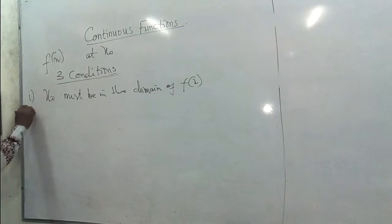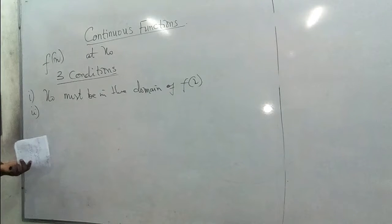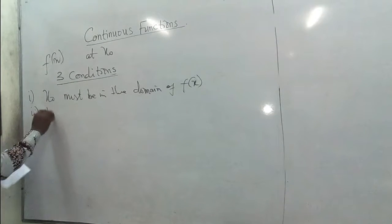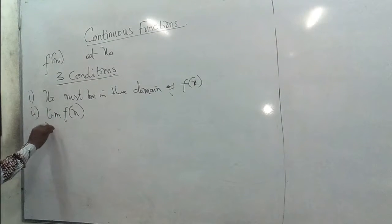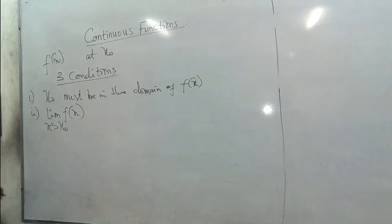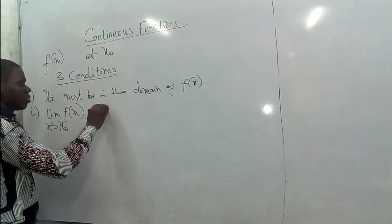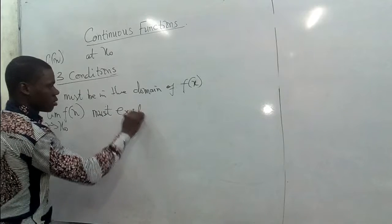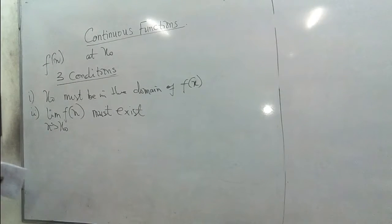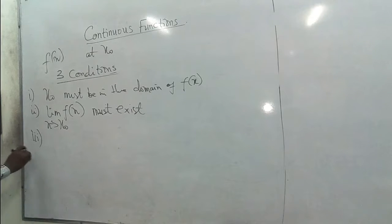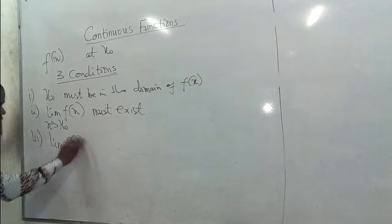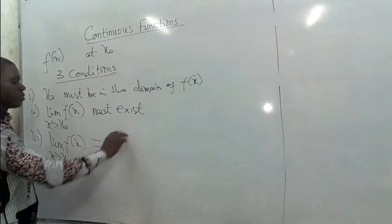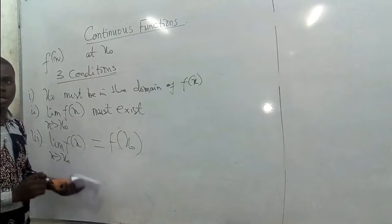The second condition is that the limit of F of X as X approaches X naught must exist. Then the third condition is that the limit of F of X as X approaches X naught should be equal to the function value at X naught.